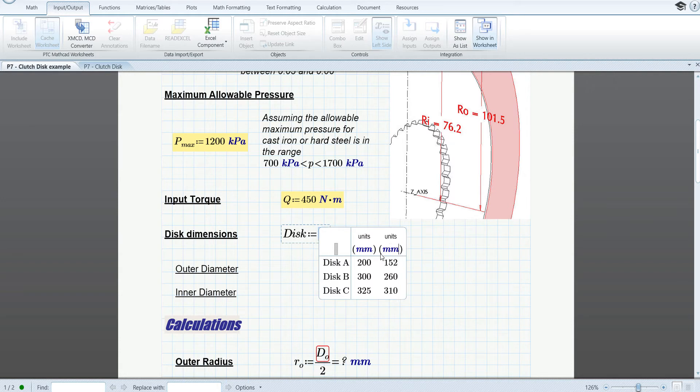So once we've done that, all we need to now do is link the output from that ComboBox to the variables that we used in the rest of the worksheet, which was DO for outer diameter and DI for inner diameter.